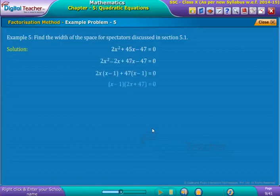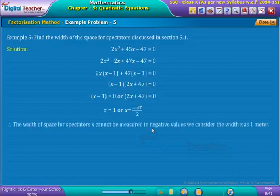Now, by applying factorization method, we get as shown on screen. So, the roots of the given equation are x is equal to 1 or minus 47 by 2. Since the width of space for spectators x cannot be measured in negative values, we consider the width x as 1 meter.